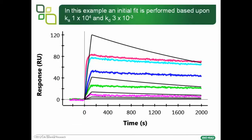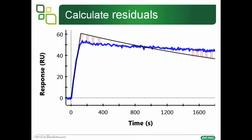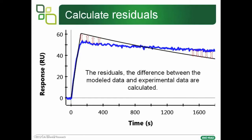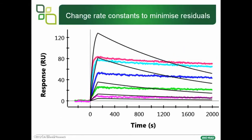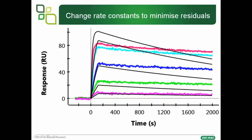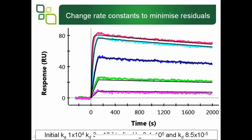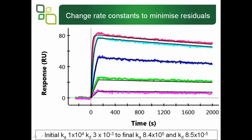What the software does is change the rate constants based on the residuals. For the initial rate constants, it looks at the residuals — the difference between the experimental data, the blue line, and the fit data, the black line. The residuals are calculated, and the software then changes Ka and Kd values to decrease the residuals and generate rate constants closer to the experimental data. The software goes through many iterations to minimize residuals and generate rate constants that match the experimental data as closely as possible.